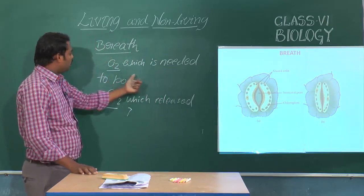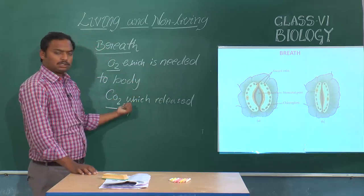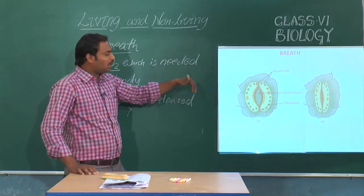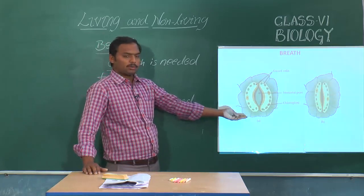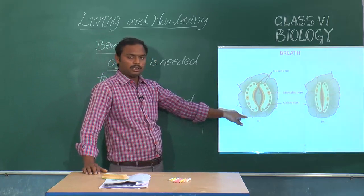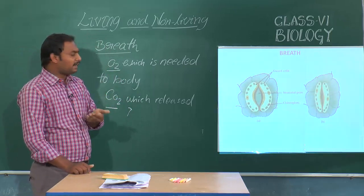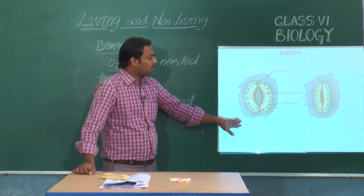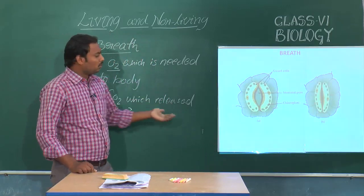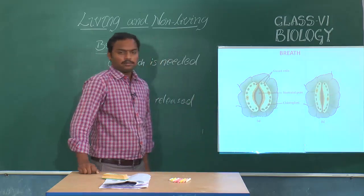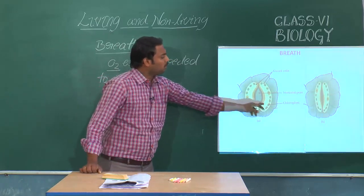Plants take carbon dioxide into them and release oxygen in return. This activity is performed by stomata, which are similar to our nose. Just as human beings take and release gases through the nose, stomata — present on the epidermis of the leaves, on the upper surface of the leaf — perform the same function. Guard cells regulate the function of the stomata.